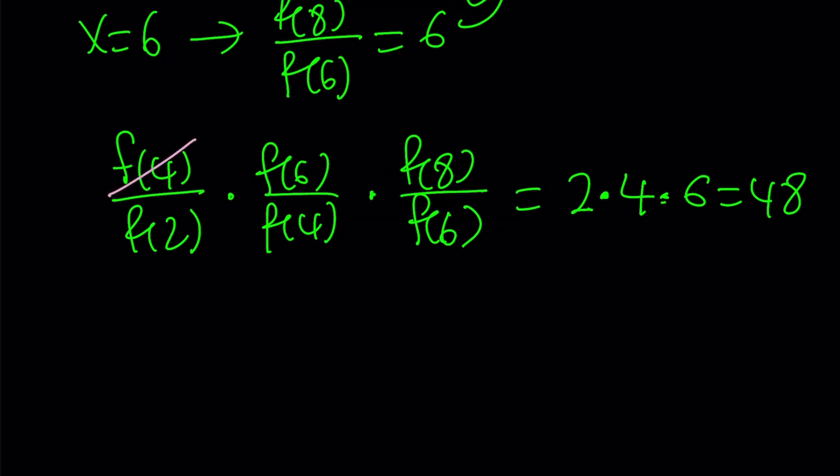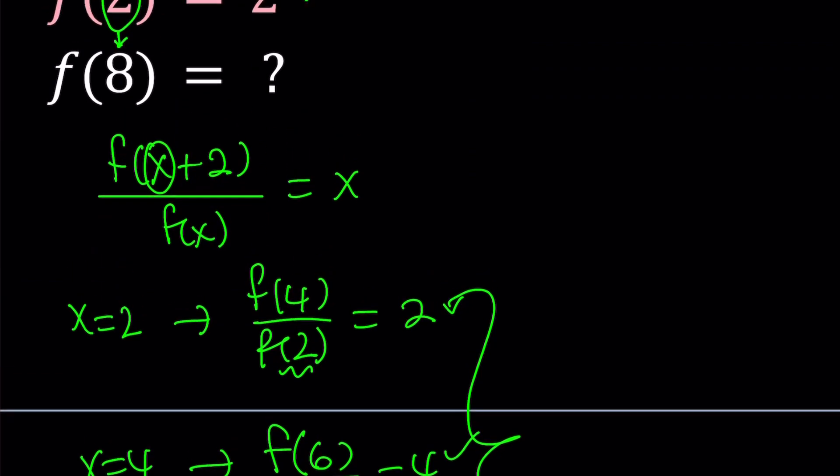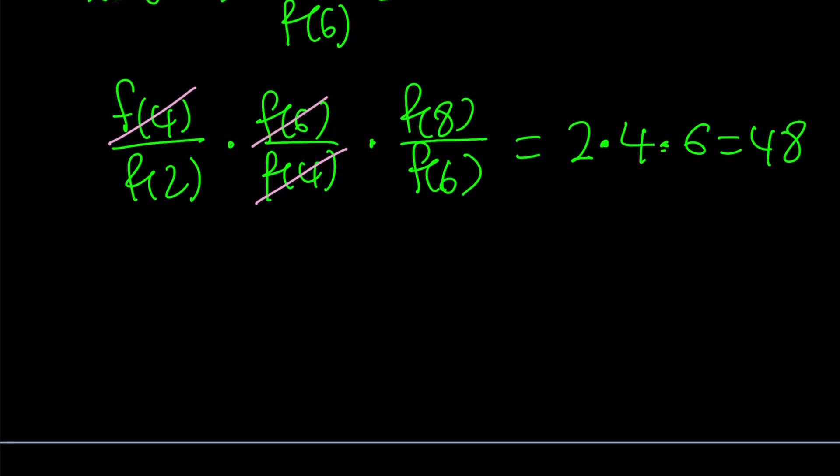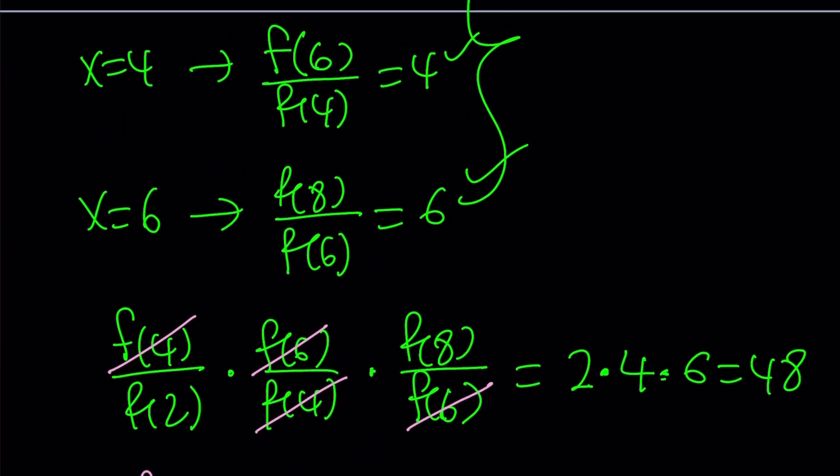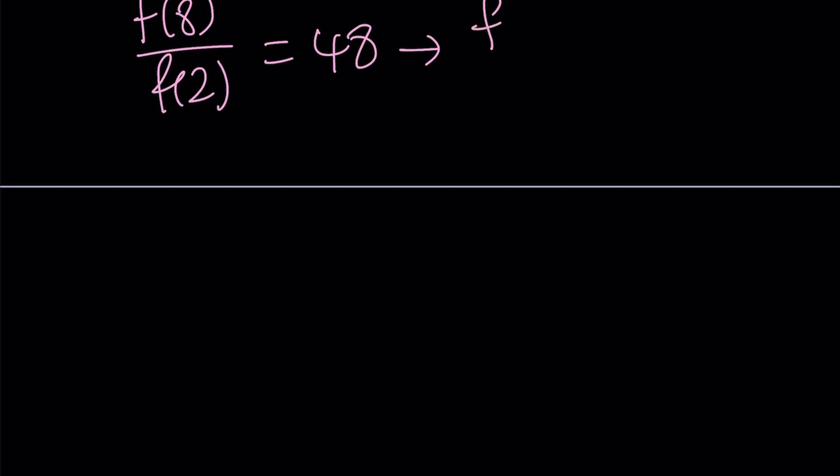So for example, f(4) cancels out as long as it's not equal to 0. And from these equations, we do know f(4) does not equal 0. None of these can be 0, right? And what about f(6)? That can also be canceled out. And we end up with f(8) over f(2) equals 48. Now remember, our goal is to find f(8). And we do know f(2). f(2) is equal to 2. So replace f(2) with 2, you get f(8) divided by 2 equals 48. And now finally, we can find f(8) to be 96 from here.